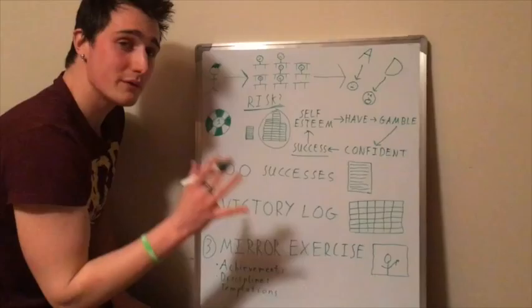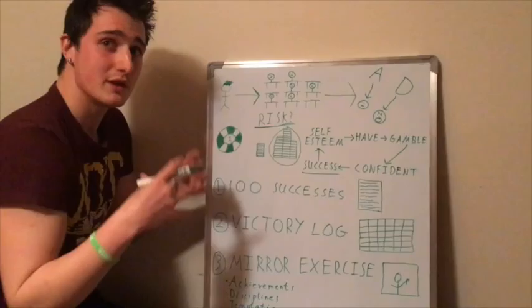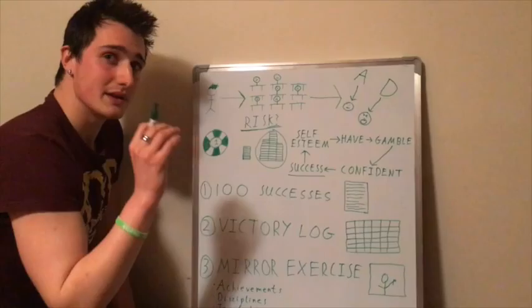So here are three techniques that you can use right now to increase the success that you have in your life. First technique is the 100 successes task. All this involves is get yourself a sheet of paper and write down 100 things that you have achieved in your life.